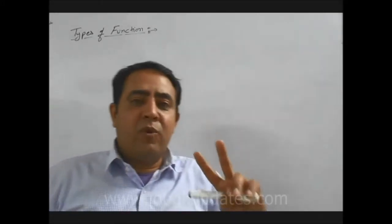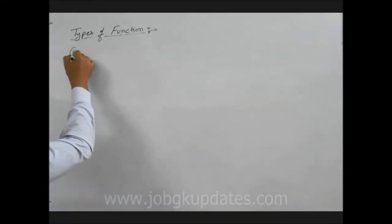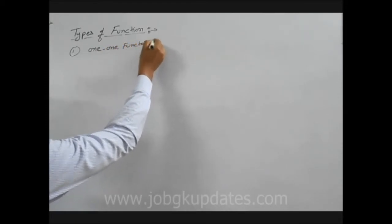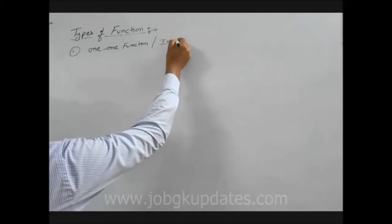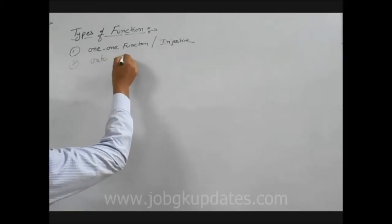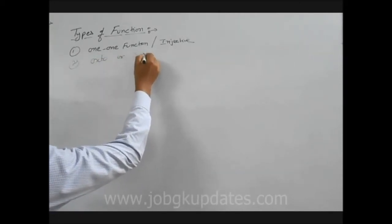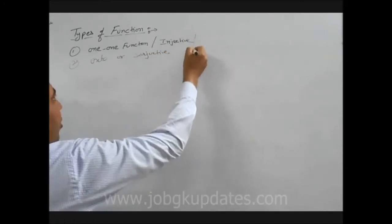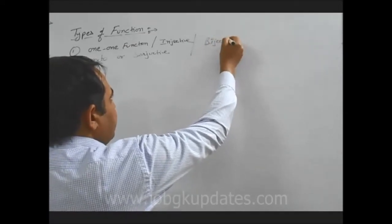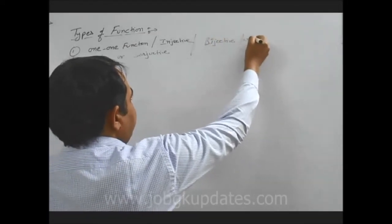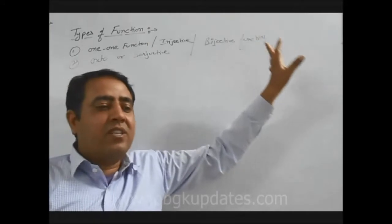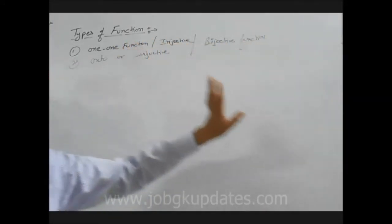Functions are mainly of two types: the first is one-one function, also called injective function, and the second is onto function. A function which is both one-one as well as onto is known as a bijective function. Now we will define what we mean by one-one function and onto function.